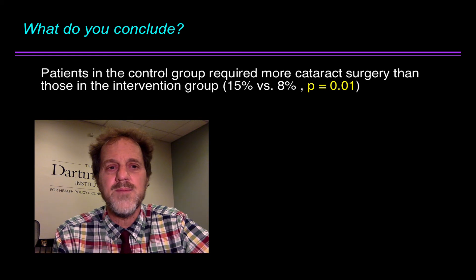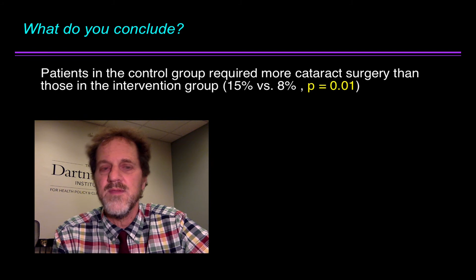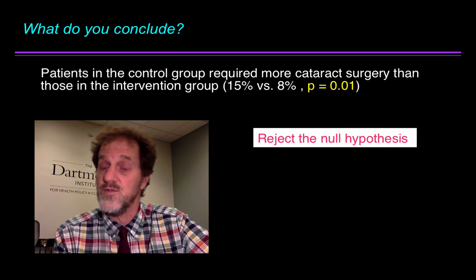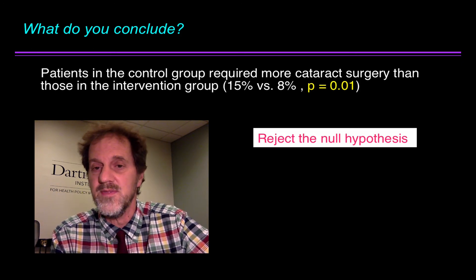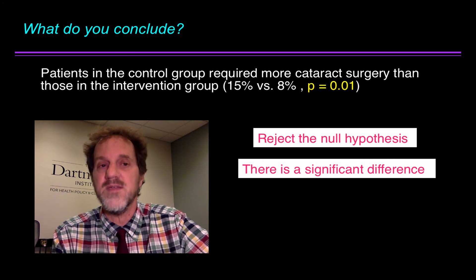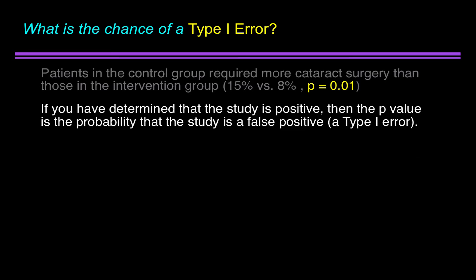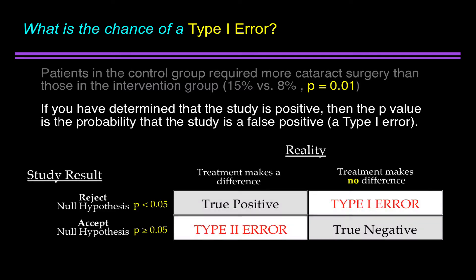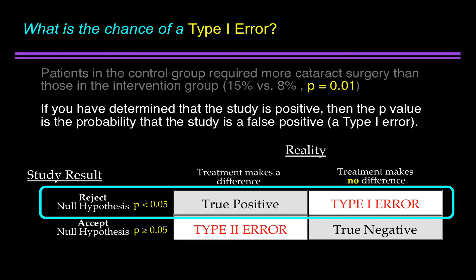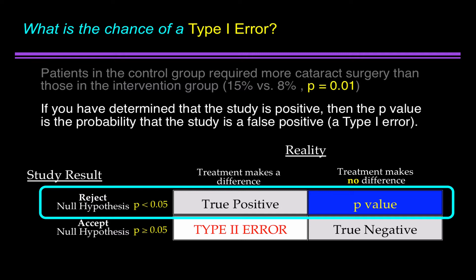Let's look at this study: patients in the control group required more cataract surgery than those in the intervention group — 15% versus 8%, p equals 0.01. What do you conclude? You reject the null hypothesis, because the p-value is less than 0.05. You assert there is a significant difference. What is the chance of a type 1 error? If you've determined that the study is positive, then the p-value is the probability that the study is a false positive — a type 1 error. Looking at the 2x2 table, we've rejected the null hypothesis, so the probability of a type 1 error is 1%, or p equals 0.01.